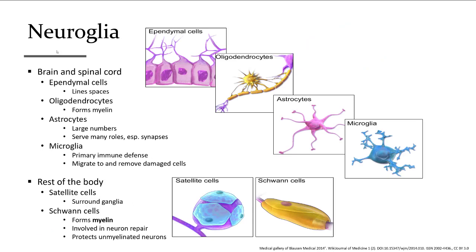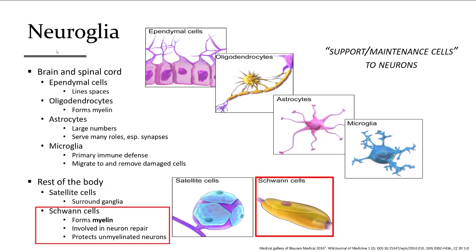Neuroglia are considered support cells for the electrically conducting neurons. In the central nervous system, made of the brain and spinal cord, there are neuroglia that line cavities or spaces within, form a coating around parts of neurons such as myelin, and help with connections and cleanup damage. In the periphery or rest of the body, satellite and Schwann cells provide support. The main neuroglia cell we'll focus on will be the myelin-producing Schwann cell.